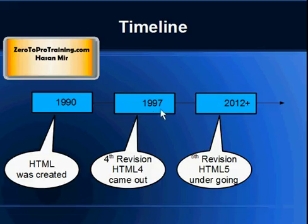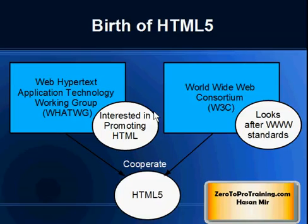HTML was created in 1990, and in 1997 its fourth revision came out. It has been quite a while, and currently its fifth revision is underway — it's not completed yet, at least as of 2012. So where did HTML5 come from? There were two groups involved in the creation of HTML5: one is called the Web Hypertext Application Technology Working Group,